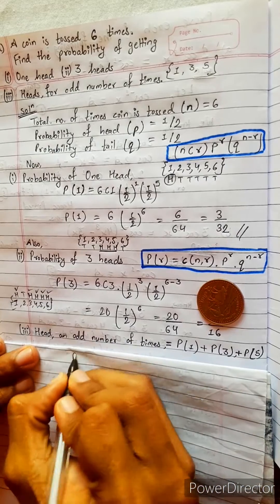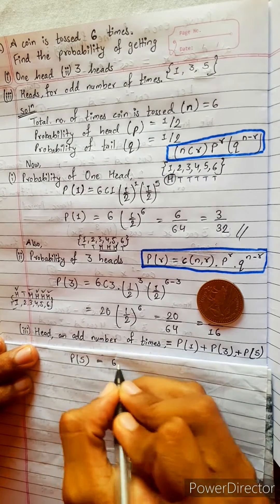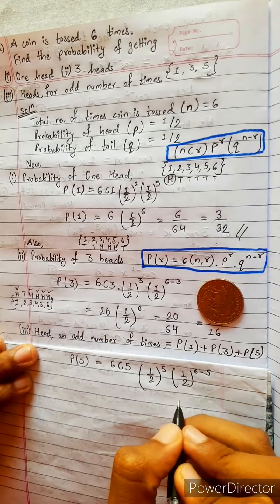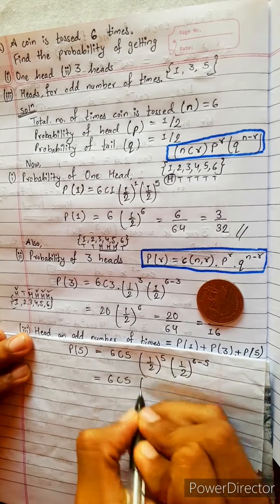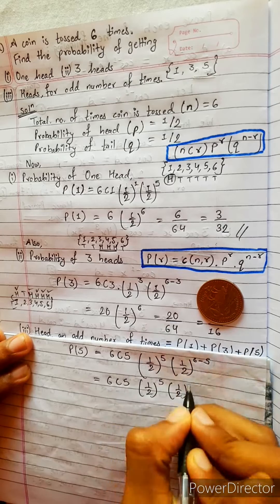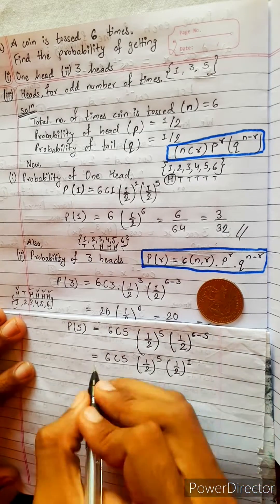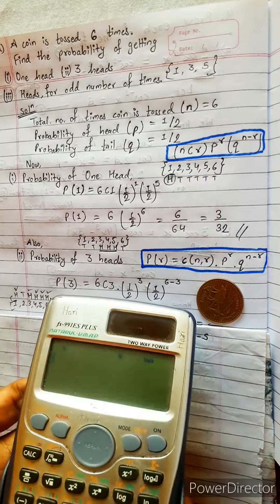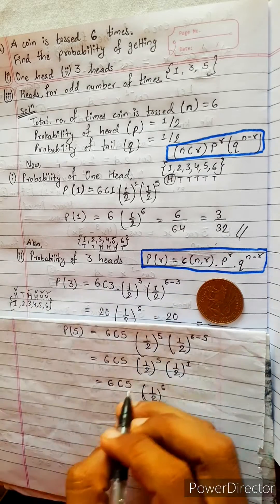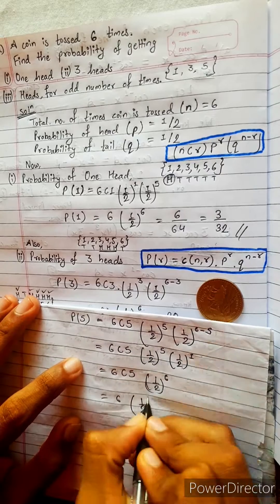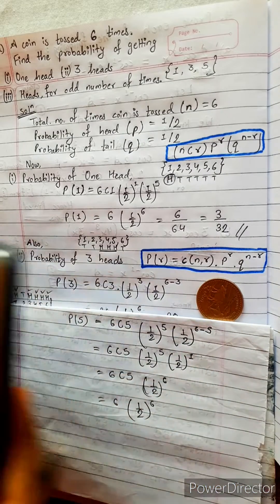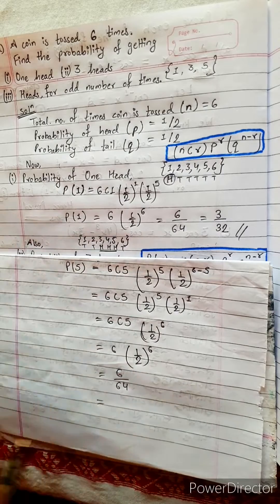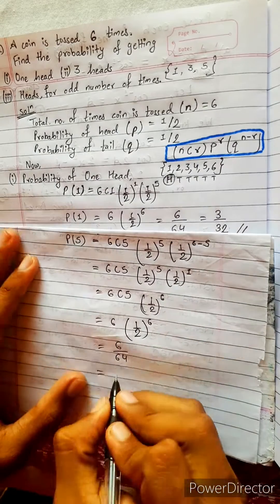P(5) equals 6 C 5, into one by two power five, into one by two power six minus five, which is one. So 6 C 5 equals six, into one by two power six, which gives six divided by sixty-four, equals three by thirty-two.